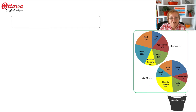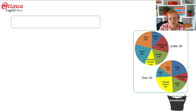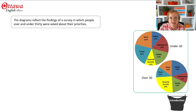First of all, let's look at the introduction. We've got these two circles. We know that it's the lifestyle priorities of different age groups because we were told that in the question, and we can see that those age groups are either under 30 or over 30. So we might say something like: the diagrams reflect the findings of a survey in which people over and under 30 were asked about their priorities.